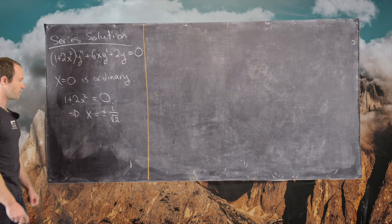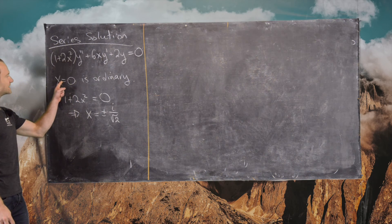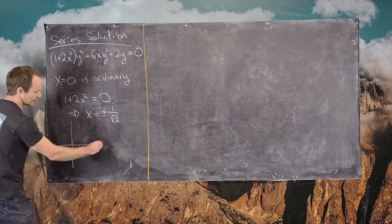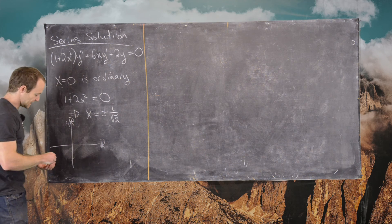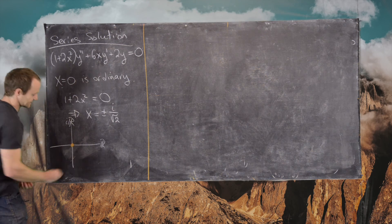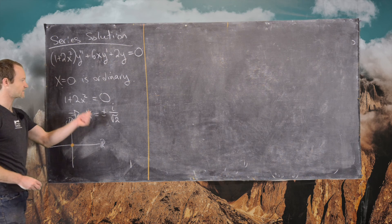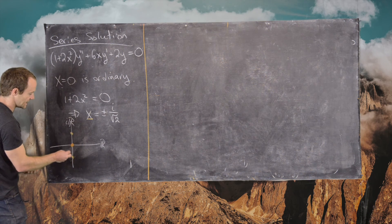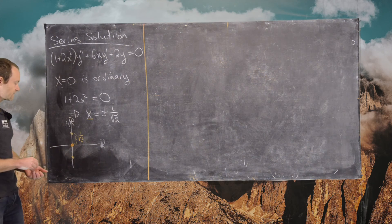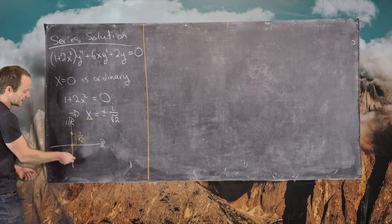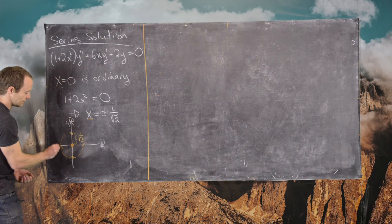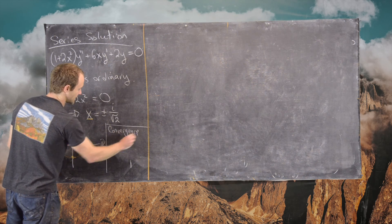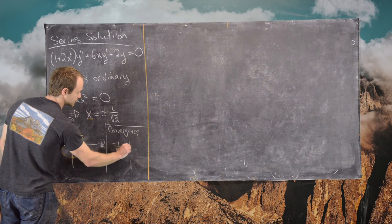Every point on the real line is an ordinary point. If we think about the distance between x equals 0 and i over root 2 in the complex plane — with the real axis and imaginary axis drawn — our power series solution will have a radius of convergence governed by the distance from the origin to these zeros. One zero is at i over root 2 and the other at negative i over root 2, and that distance is 1 over root 2. Thinking of this distance sweeping around in a circle gives the interval of convergence: minus 1 over root 2 to 1 over root 2.